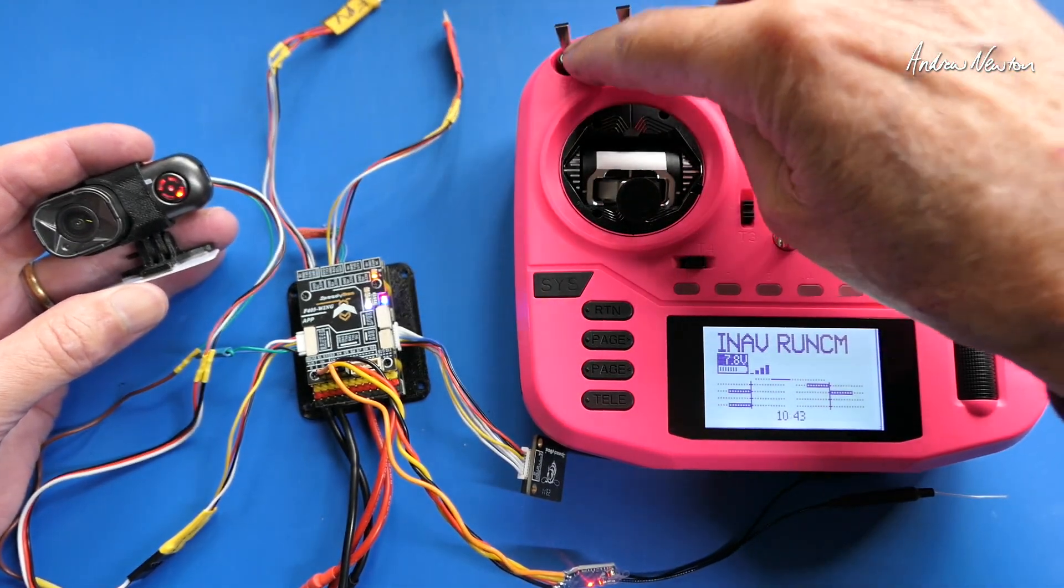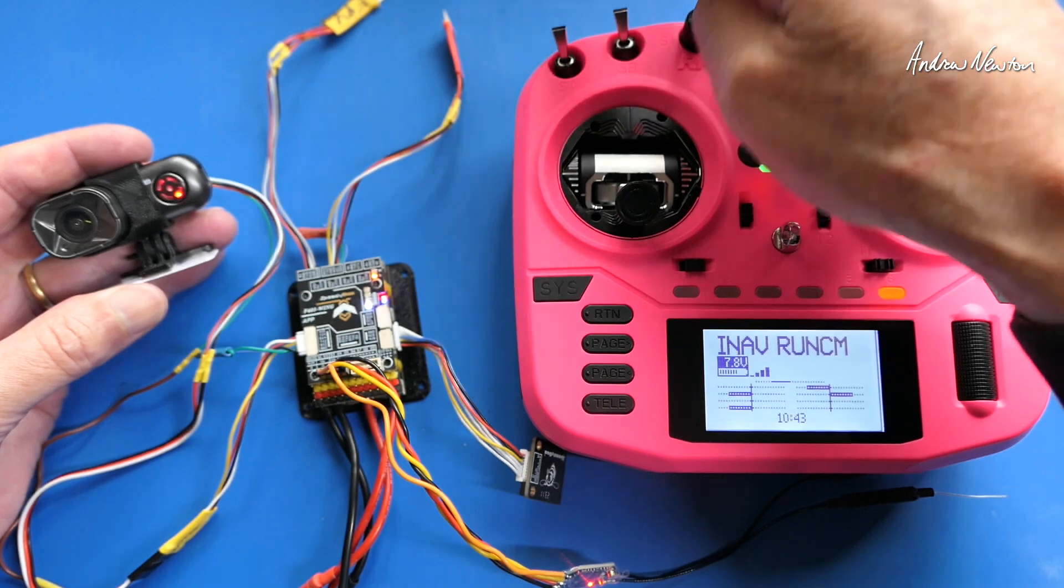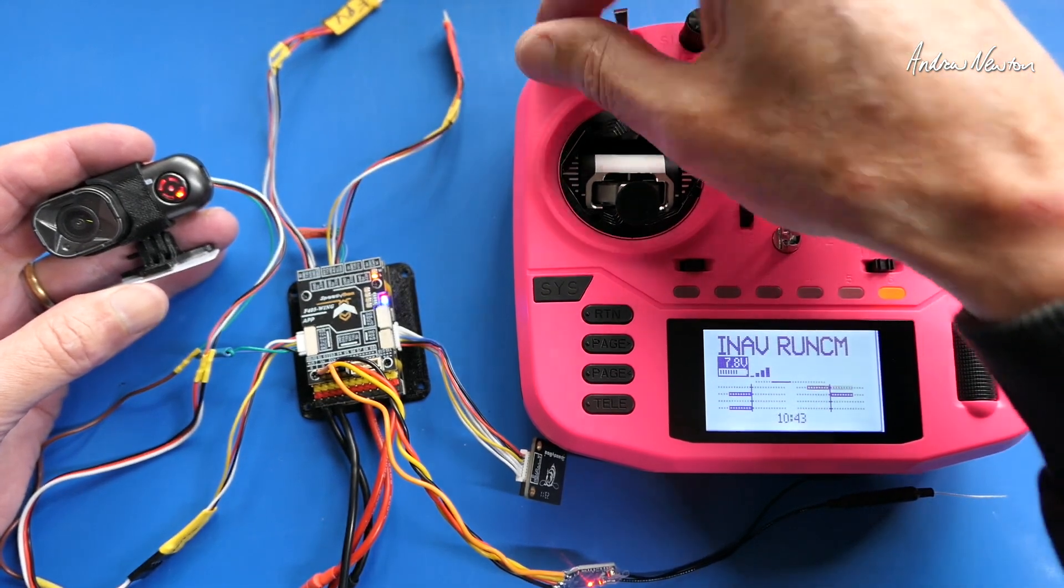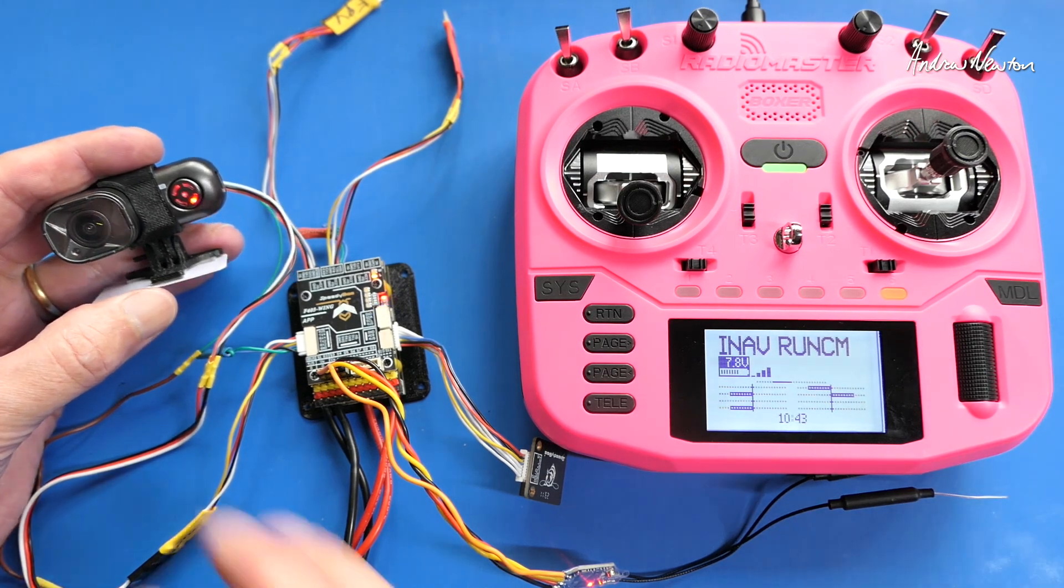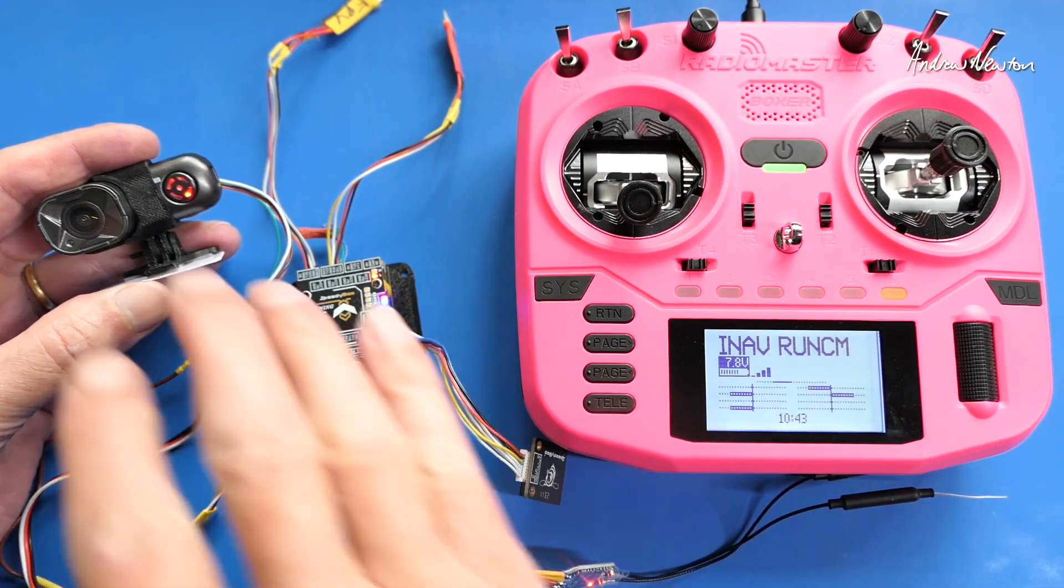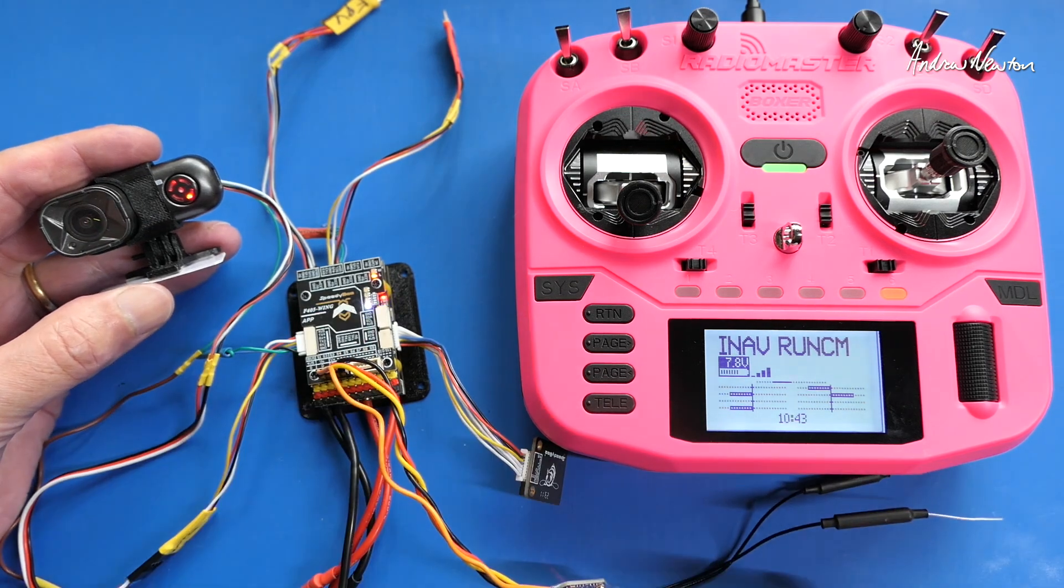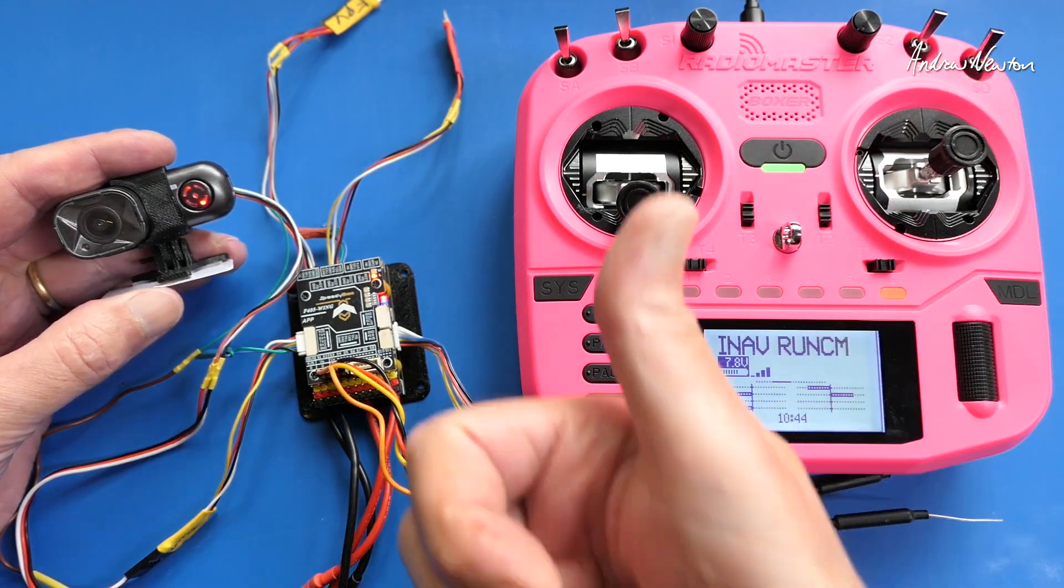Now I really wish it was just one position for record and the other position for stop recording, but that's not the way it works unfortunately. But anyway that's how to do UART control of your Runcam Thumb using iNav and the Speedybee F405 wing board. Thanks for watching, see you in the next video.